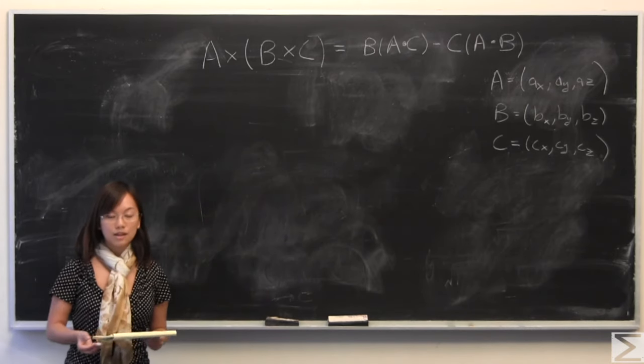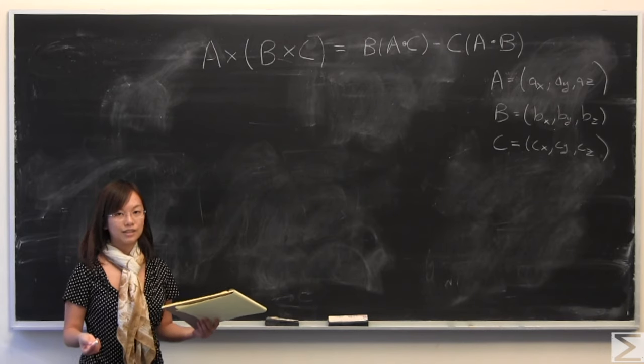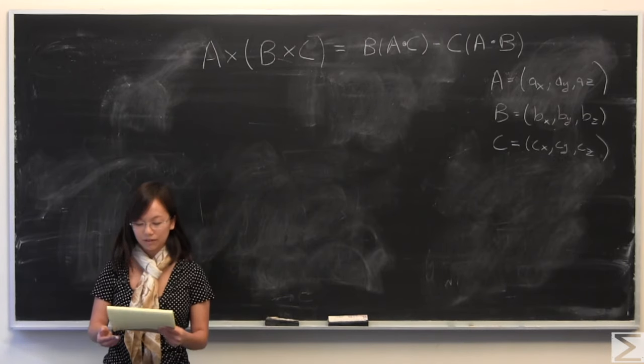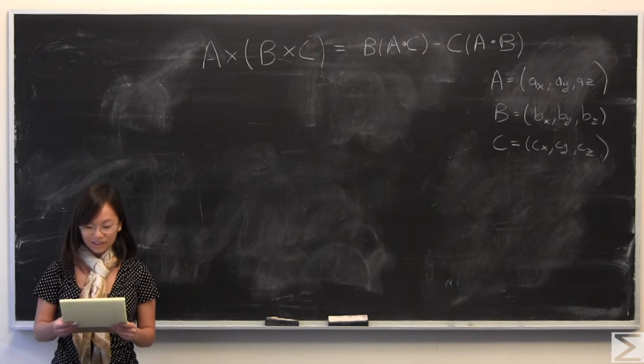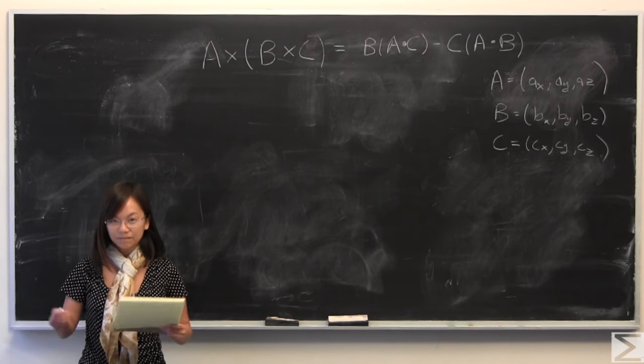It's b times the dot product of a and c minus c dot product of a dot b. So that's a very easy way of memorizing it. It'll come in handy.